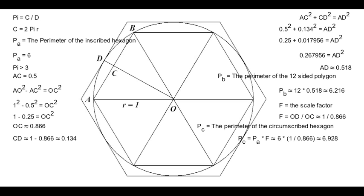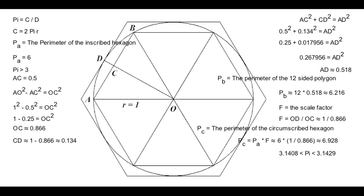By using these methods, Archimedes was able to figure out that pi was in between 3 and 10 over 71, or approximately 3.1408, and 3 and 1 seventh, or approximately 3.1429.